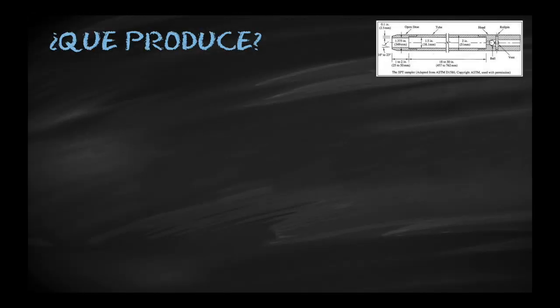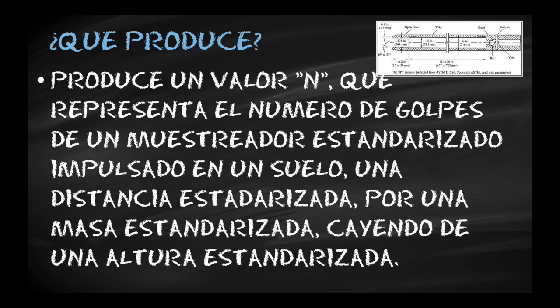¿Qué produce este ensayo? Este produce un valor N que representa el número de golpes del muestreador estandarizado impulsado en un suelo a una distancia estandarizada, por una masa estandarizada cayendo a una altura estandarizada. Ahora bien, todas estas cosas que parecen estándar y homogéneas, vamos a ver que la misma norma nos advierte de que no es así, y que hay que hacer unas correcciones y ser muy cuidadosos con los datos de este ensayo.